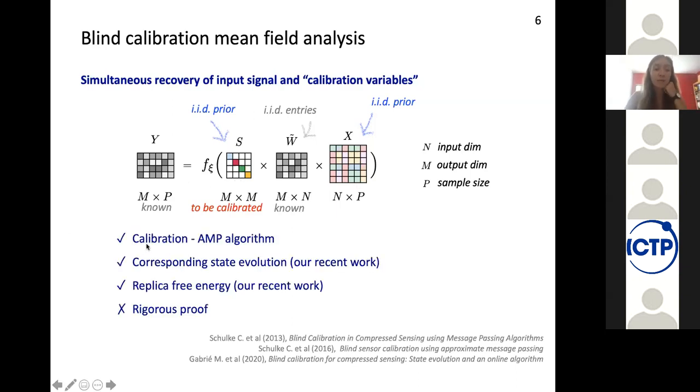And so for this problem, there was a calibration AMP inference algorithm that was proposed in 2013 by Christoph Schulke and collaborators. And in a recent work, we proposed the corresponding state evolution and the replica free energy. So for the complete mean field picture to be complete in this model, what is missing is a rigorous proof of the replica computation dealing with the information theoretically.